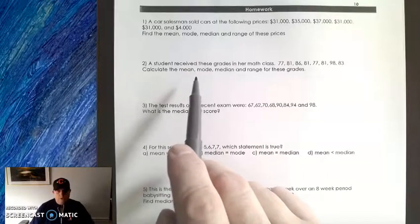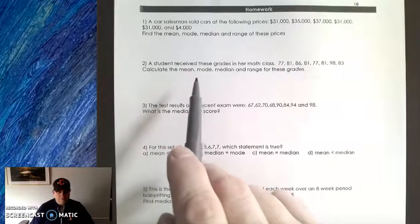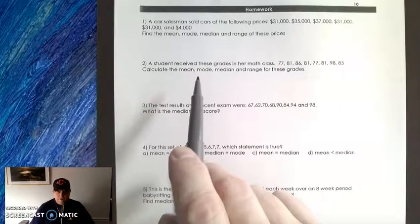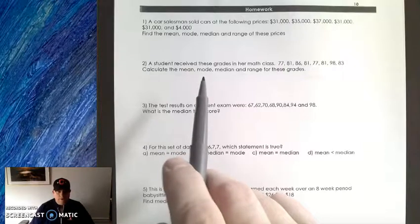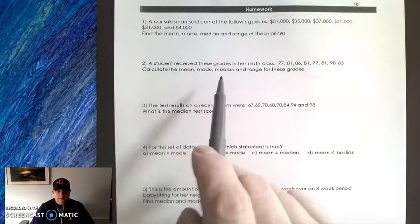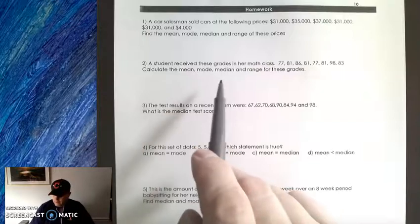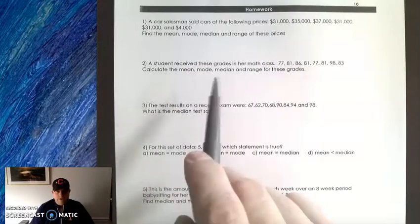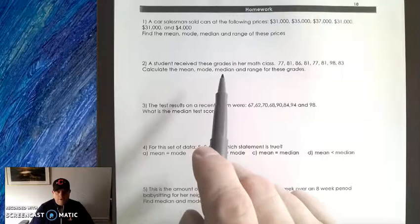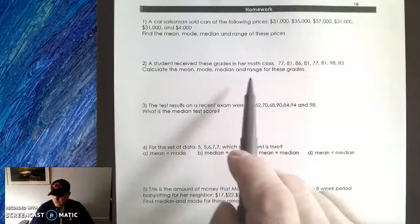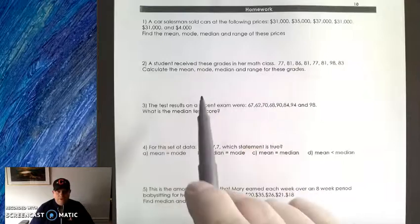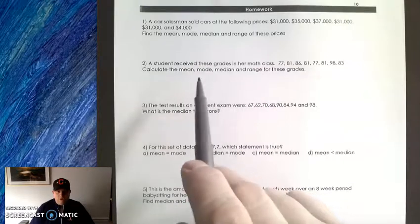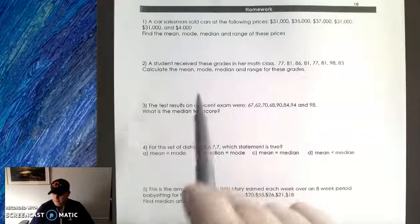The mode is the number that comes up the most, the most frequent. Sometimes you can have a mode, sometimes all the numbers could be the mode, and sometimes you can get a couple of modes. The median is the middle number. Once we arrange everything in order, that middle number is the median. The range is the difference between the highest grade and the lowest grade.